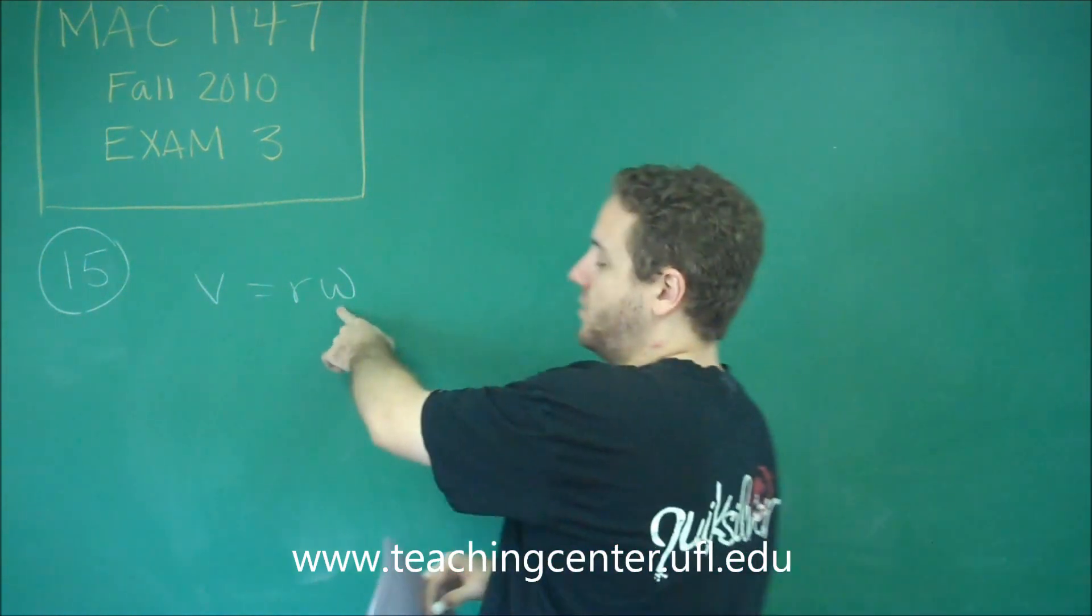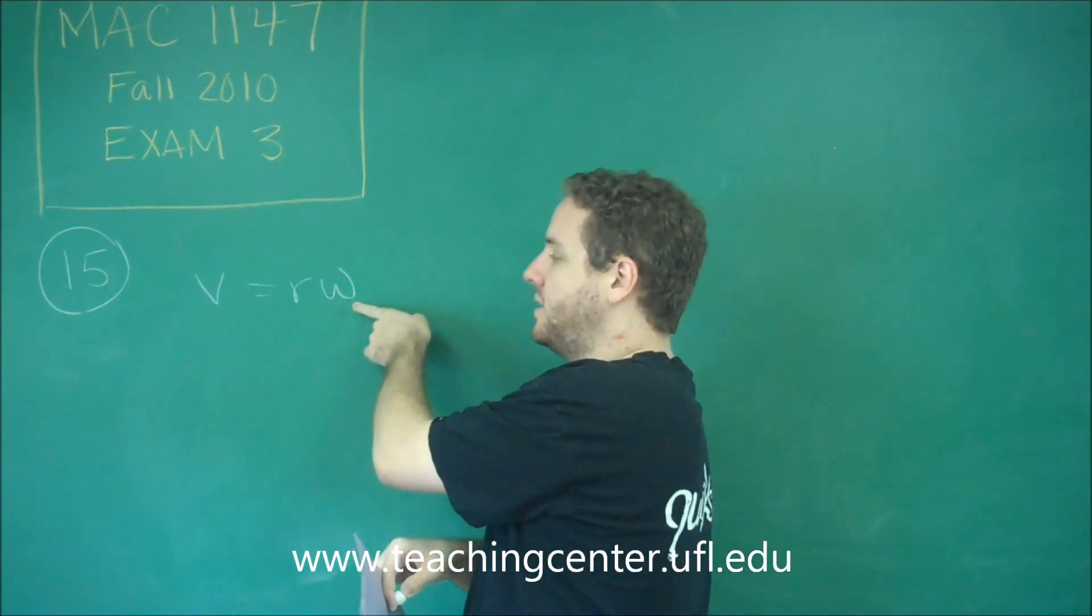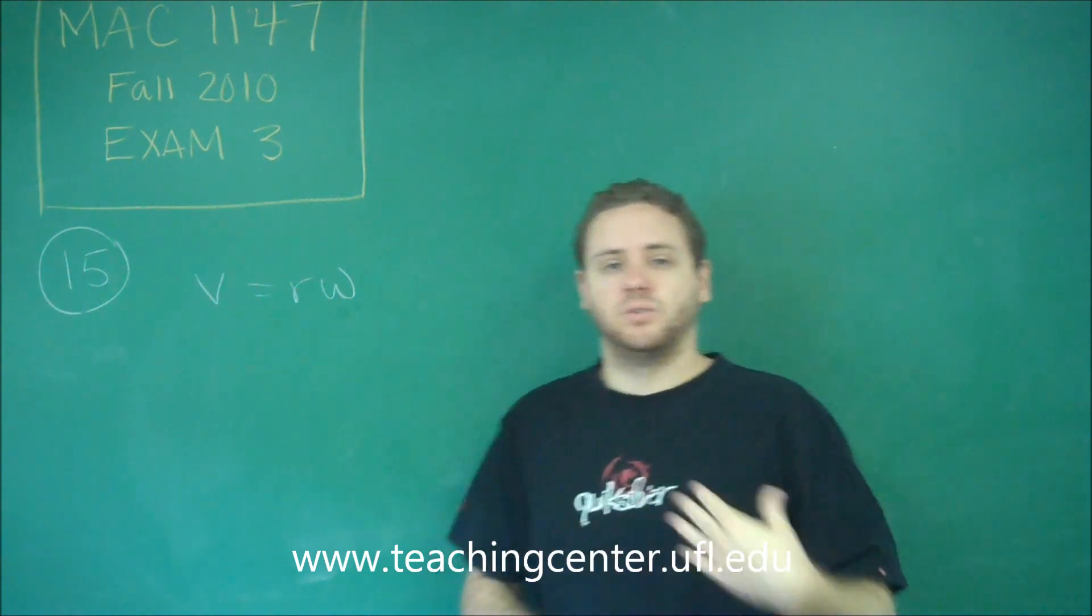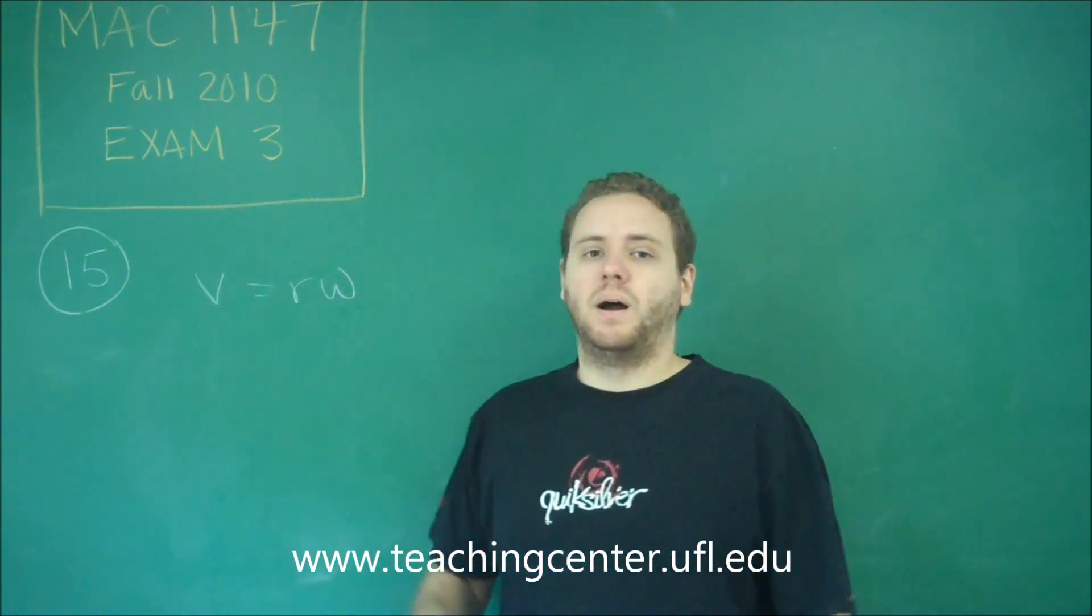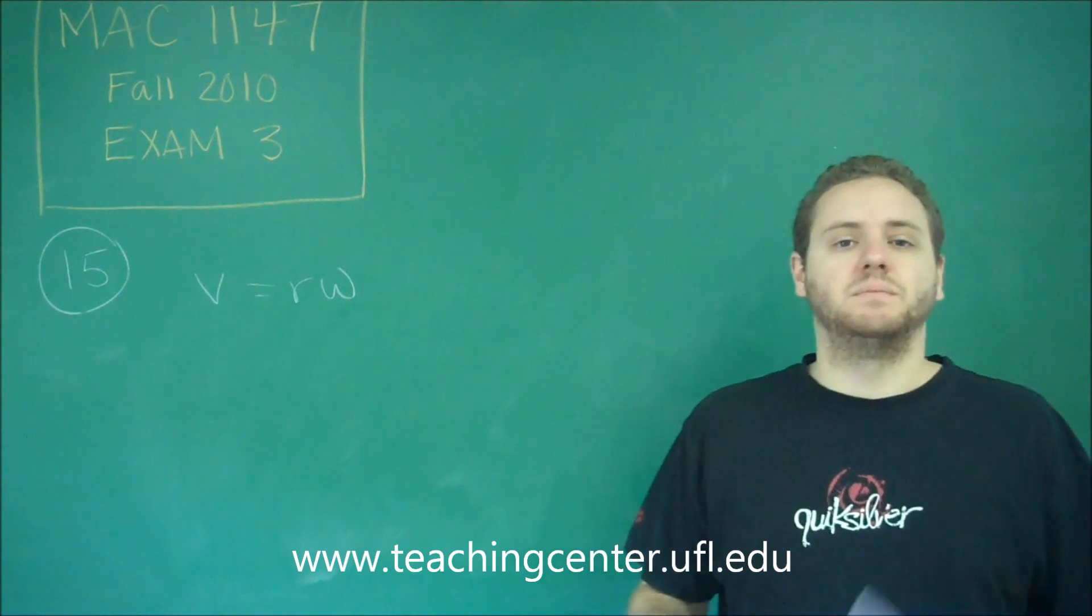Remember that omega, or W, is your angular speed. V is your regular linear speed. They're related by multiplying the angular speed times the radius.